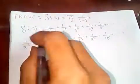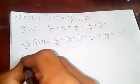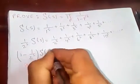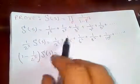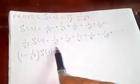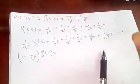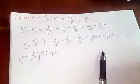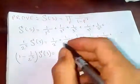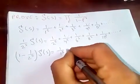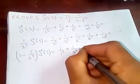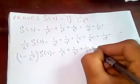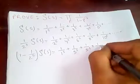Now if I subtract this from the original, 1 minus 1 over 2 to the s times zeta of s is equal to — since we subtract this, all the even terms cancel: this one, this one, six, and all the even terms cancel out. What we're left with is 1 over 1s plus 1 over 3s plus 1 over 5s plus 1 over 7s plus 1 over 9s, and so on.